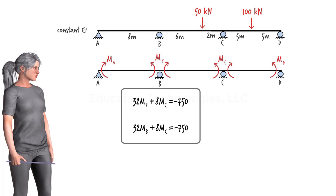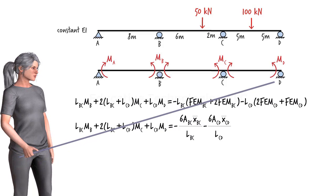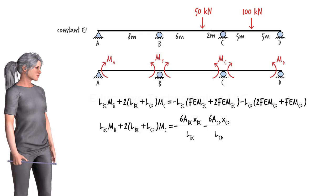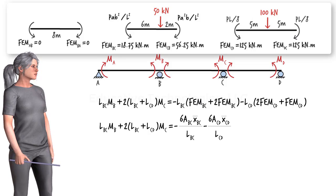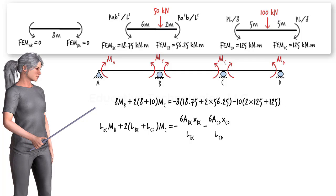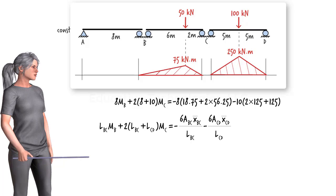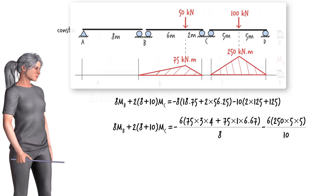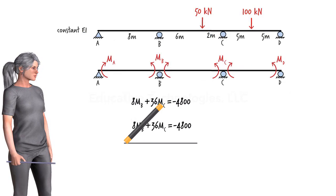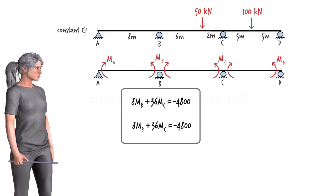For our second three-moment equation, we again start with the general equations. Since there is a roller at point D, MD equals zero. Therefore, the equations can be written accordingly. The fixed-end moments for segments BC and CD are calculated, and both the fixed-end moment formulation and the moment diagram formulation are applied. Simplifying both equations, we obtain the same three-moment equation regardless of which formulation we use.